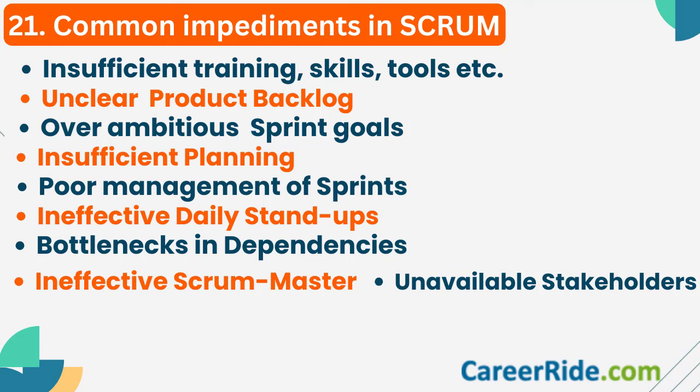The final question: what are some common impediments faced in Scrum? Impediments are the challenges a Scrum team may face that prevent it from delivering the work. Common impediments include insufficient training, skills or tools with the team; unclear product backlog; overambitious sprint goals; insufficient sprint planning; poorly managed sprints; ineffective daily stand-ups; technical debt; bottlenecks in dependencies; ineffective Scrum master; and unavailable stakeholders. These are just some of them — there could be many other things that work as an impediment for the Scrum team.